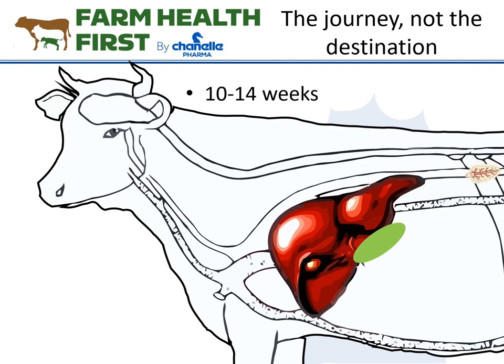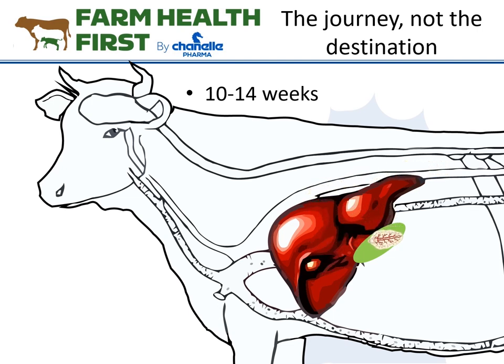Just watch what happens now as it moves around the liver. This represents the early immature and the immature stage — that's where your damage is done. It then arrives in the bile system, becomes an adult, begins to lay eggs, and the cycle completes.